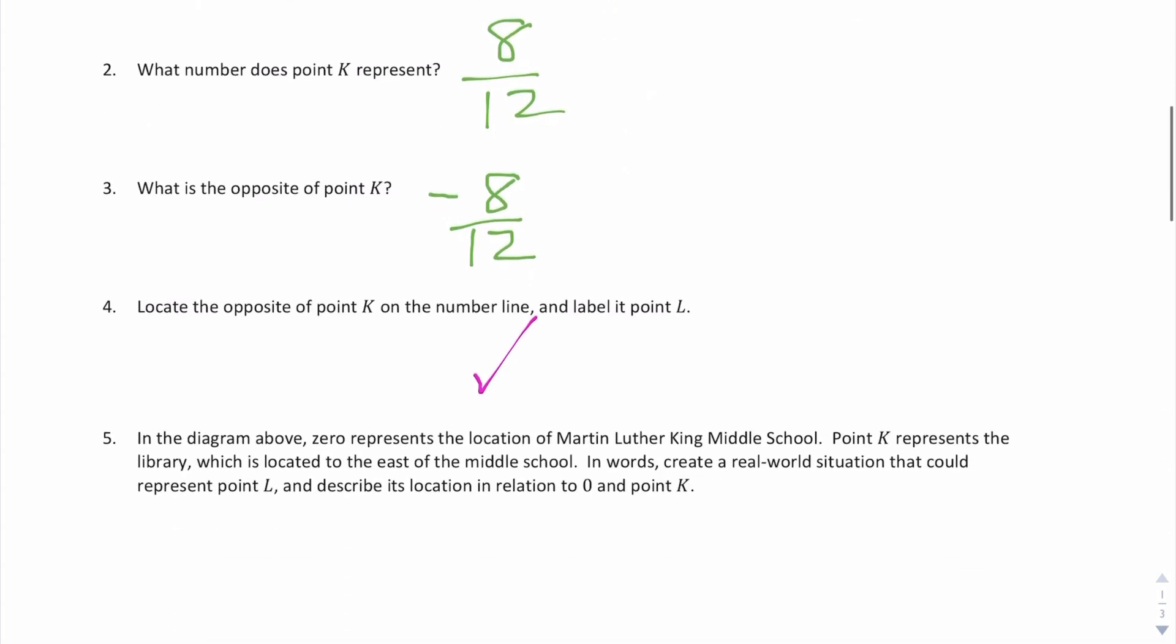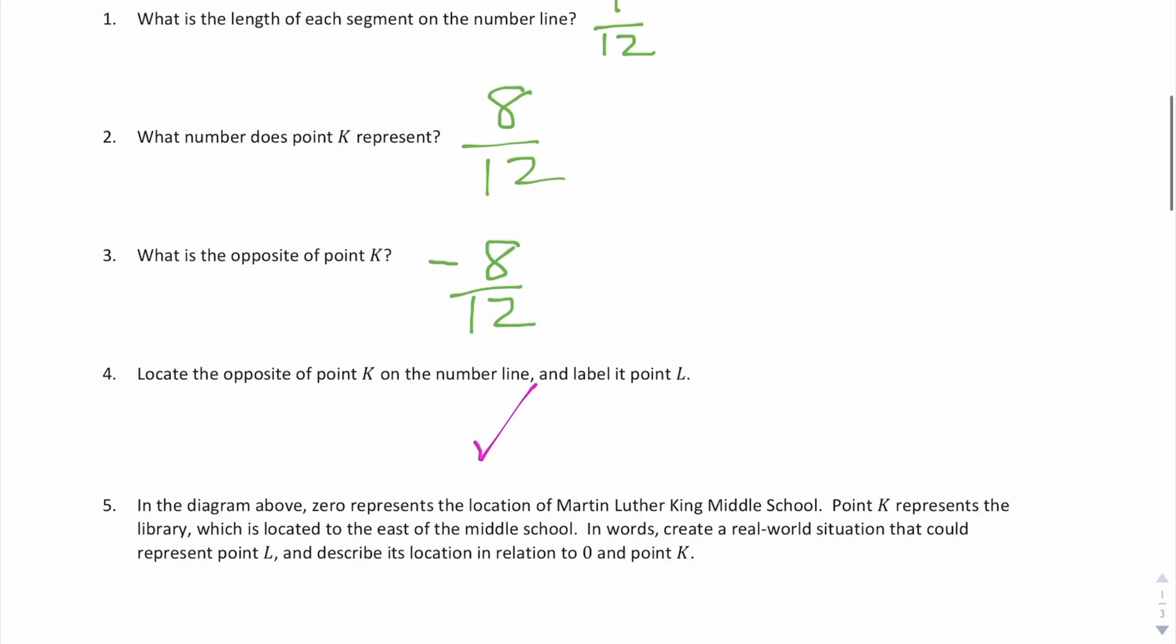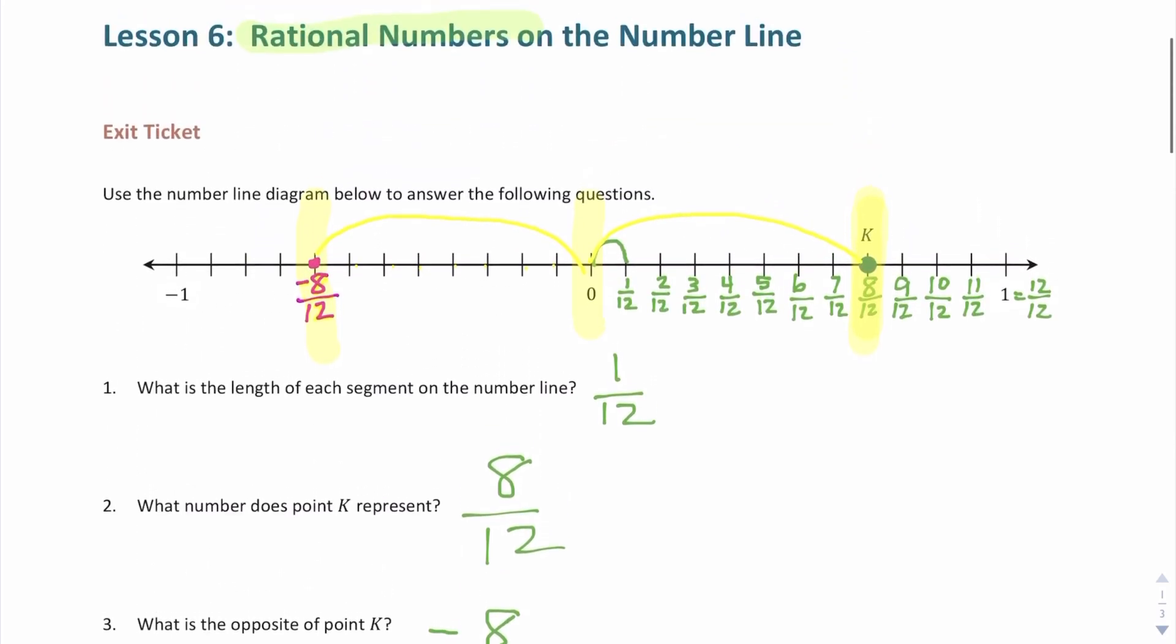Number five. So in this question, I have to create a story problem. In the diagram above, zero represents the location of Martin Luther King Middle School. Point K represents the library, which is located to the east of the middle school. In your words, create a real world situation that could represent point L and describe its location in relation to zero and point K.